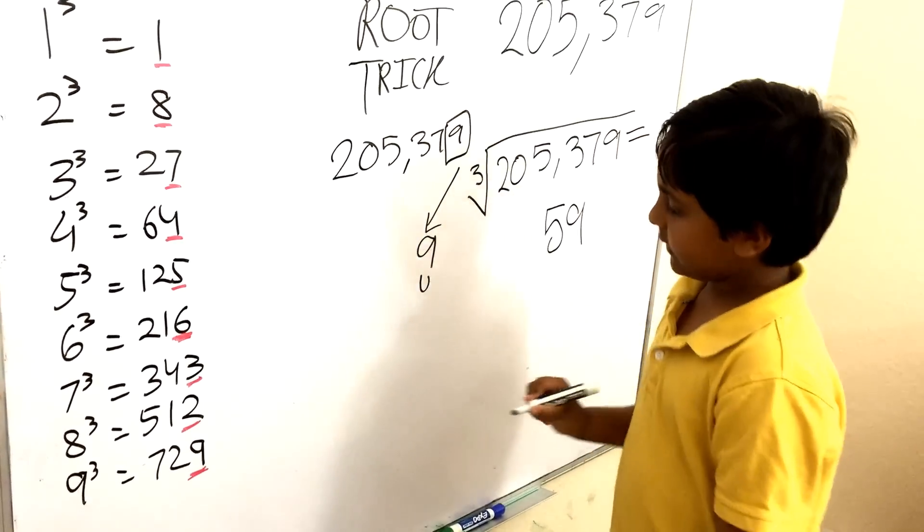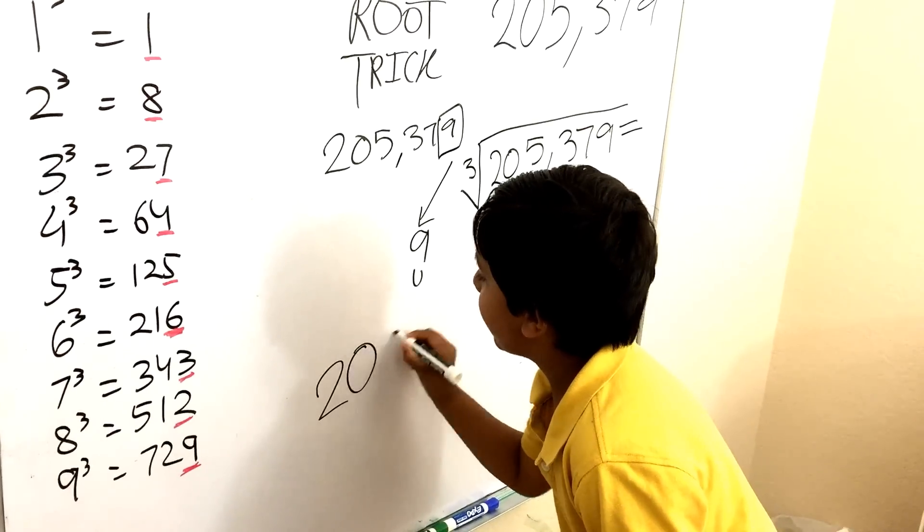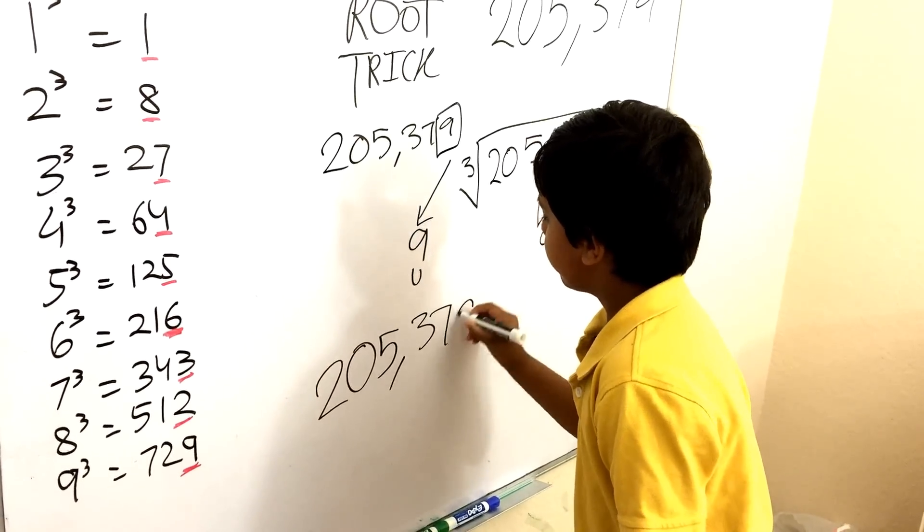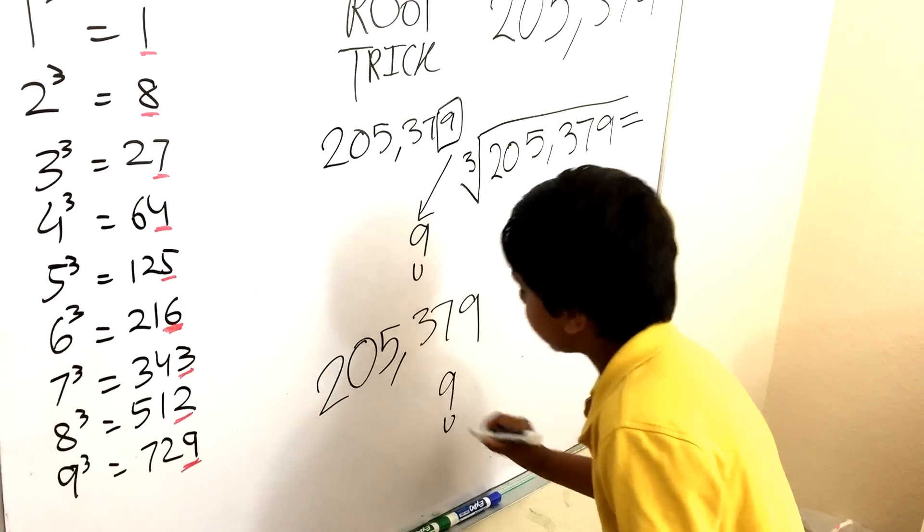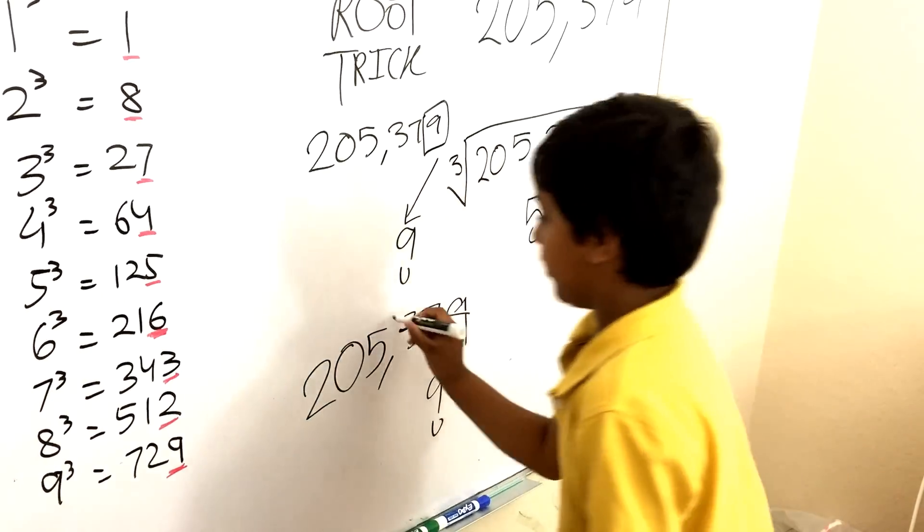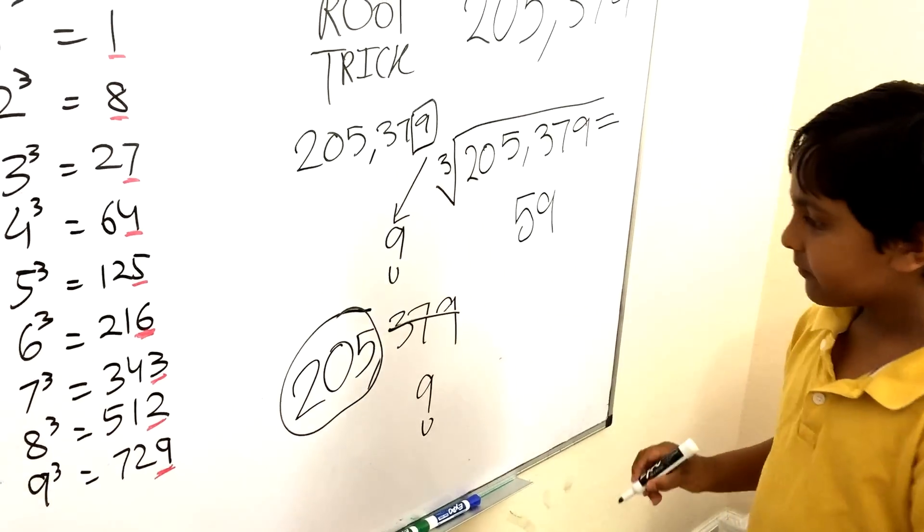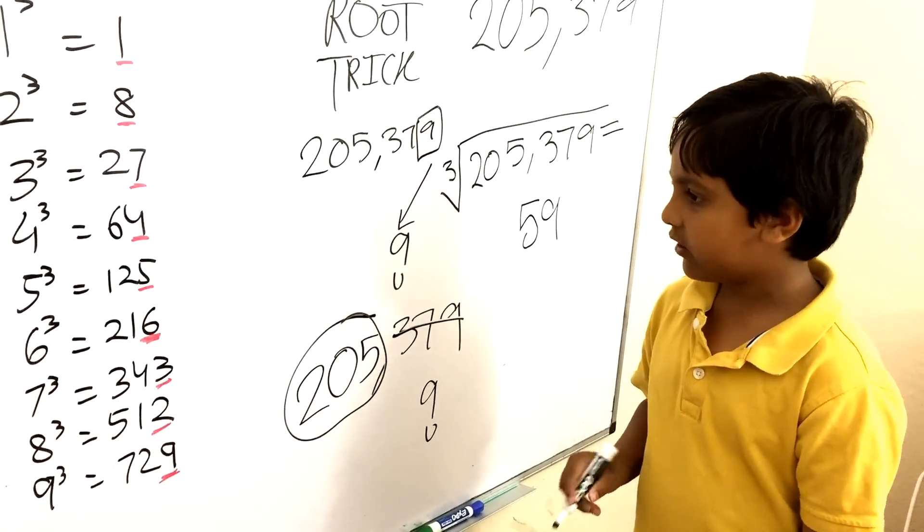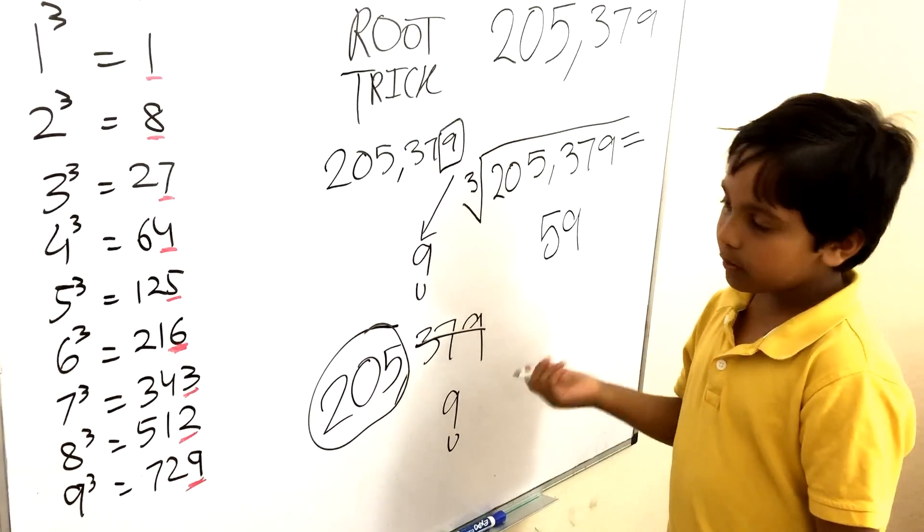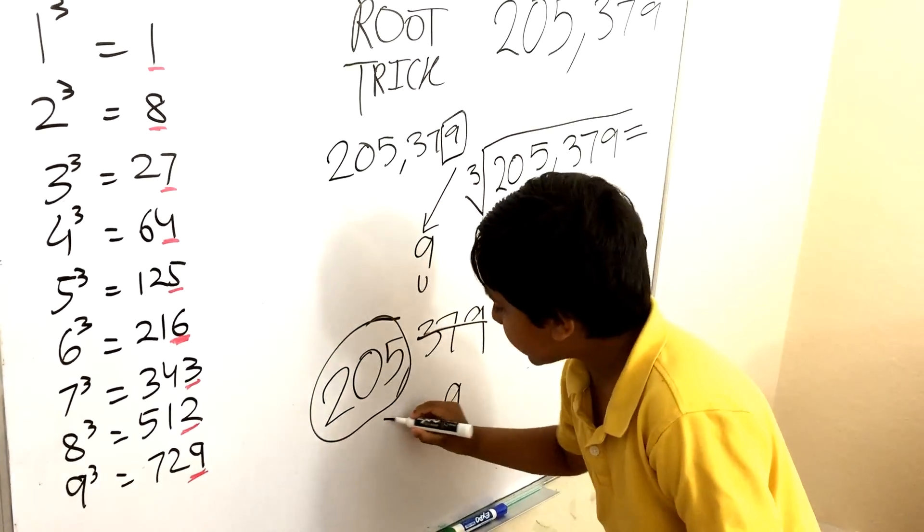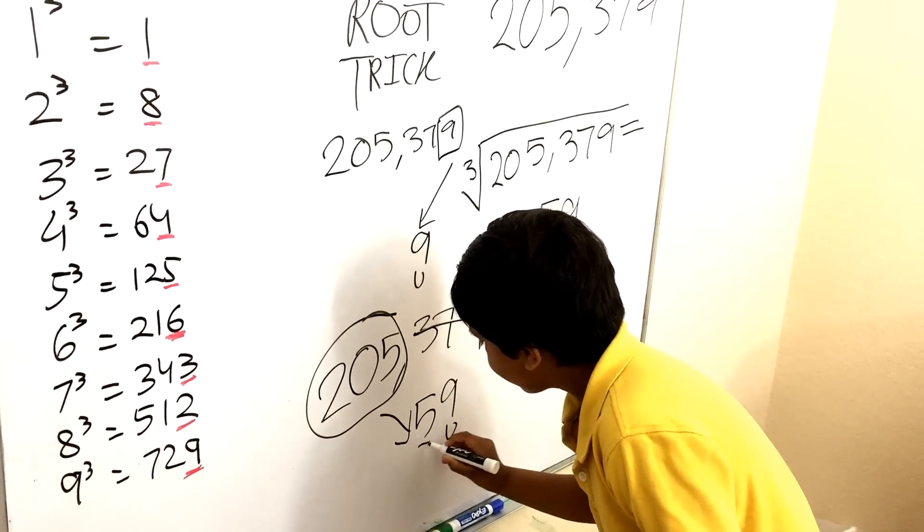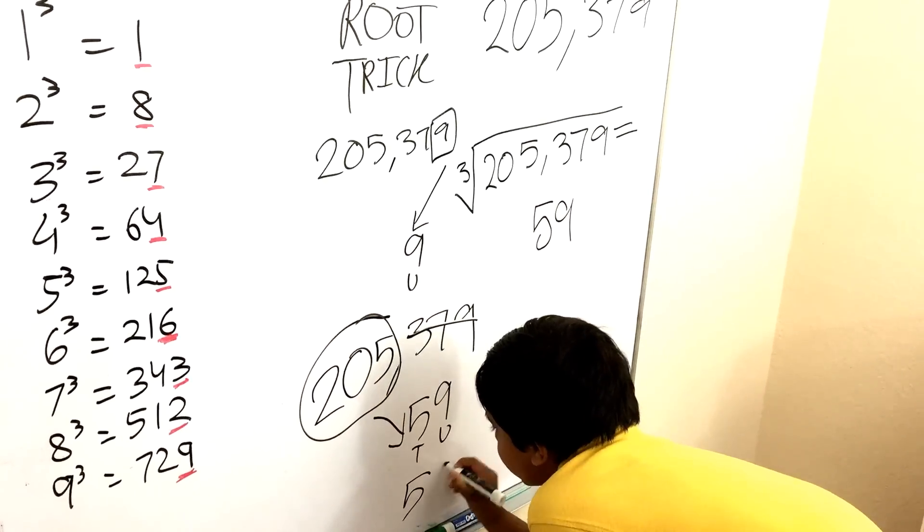And then let's write it once more down again. And we still have 9 in the units. Forget these, forget these three numbers. Look at this number right here. Round down to the nearest cube. In this case it's 125. And cube root the cube. That gives you the digit in the tens place. And together they form 59.